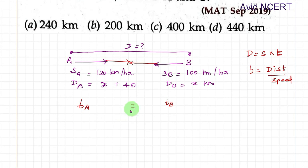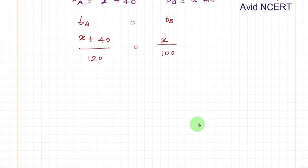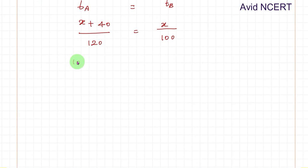So for TA equals TB, TA is distance by speed, which is x plus 40 divided by speed 120 km, equals TB, which is time taken by train B, which equals x distance divided by 100.